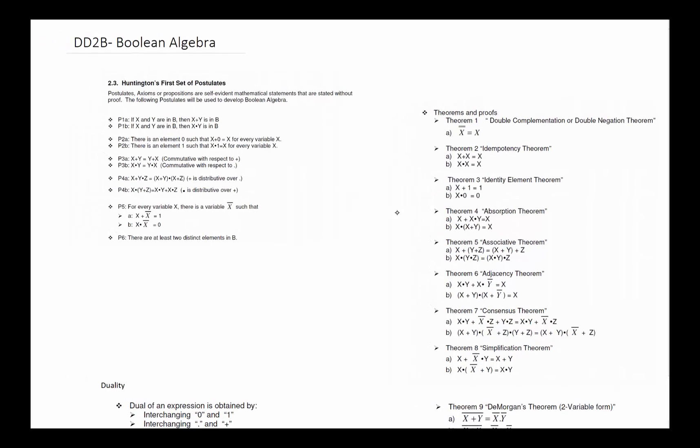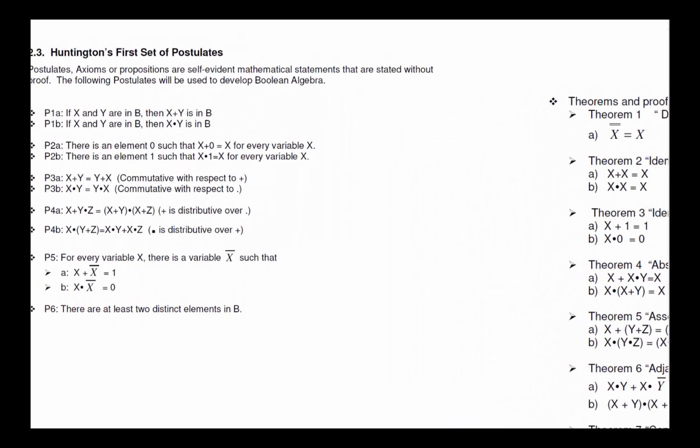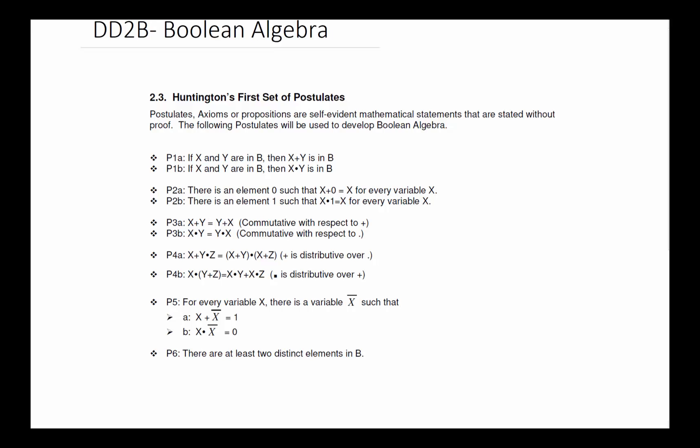So in order for us to start working on Boolean algebra the very first thing we got to establish is the domain that we are working in. In this particular case we're going to use a set of postulates called Huntington's first set of postulates to kind of get us started.